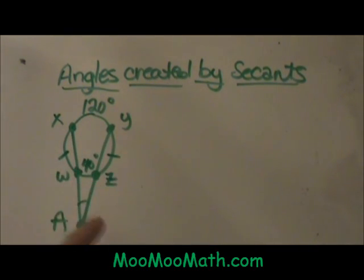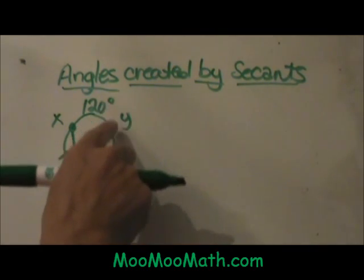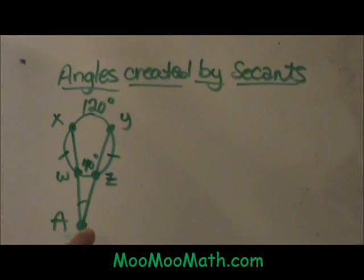We are looking at some secant segments. A secant is a line that goes through a circle in two places. So we have this line over here. AY is a secant segment and AX is a secant segment, and we have angle A outside the circle.